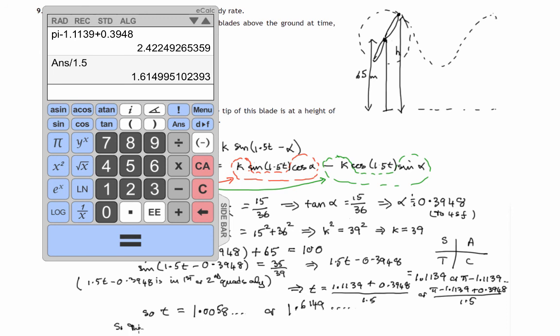So the tip achieves 100 meters after, well let's round them to one decimal place, because remember we had rounding going on to four significant figures, so we can't be too accurate here. We'll be safe if we do 1.0 seconds and 1.6 seconds.